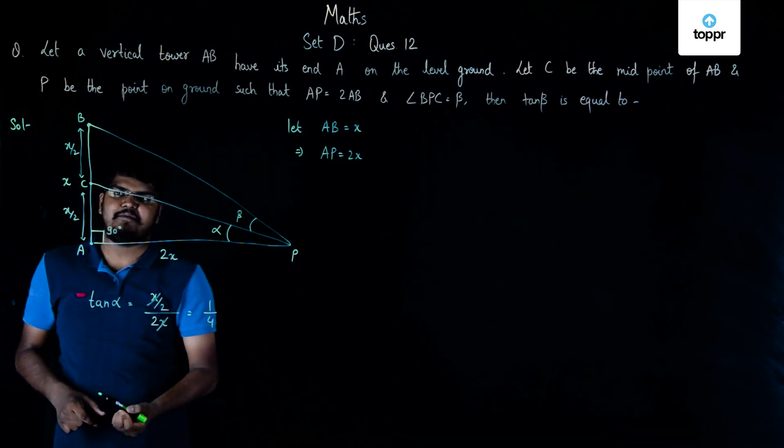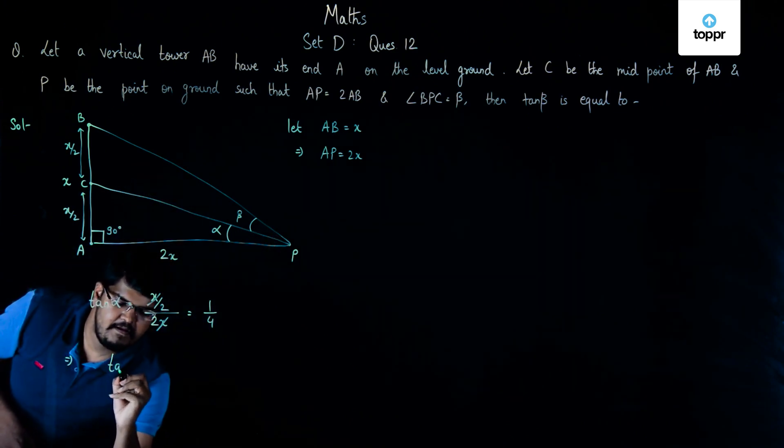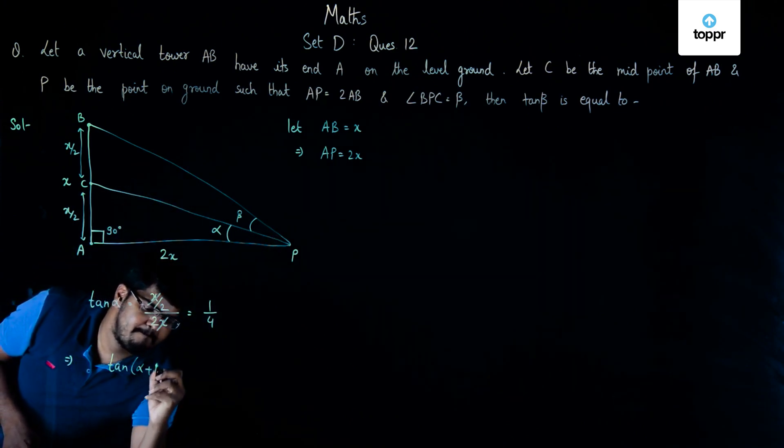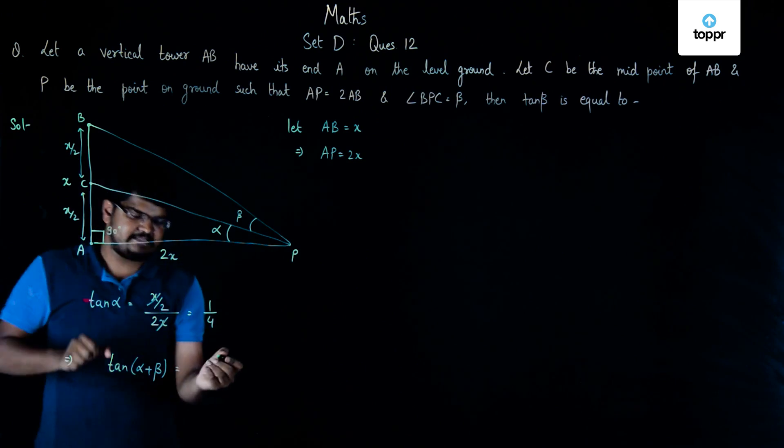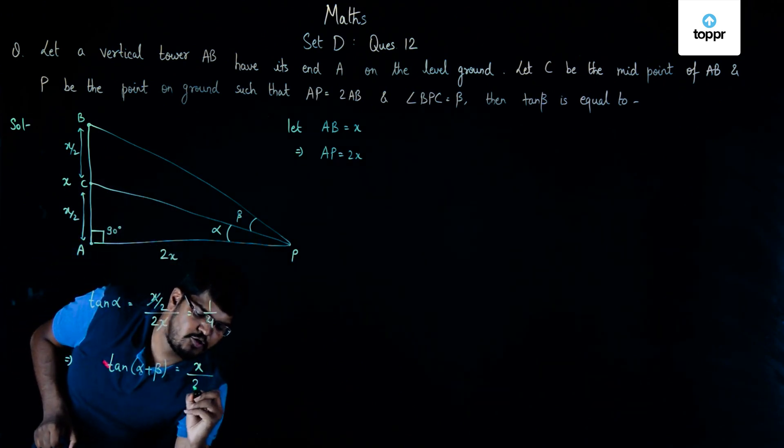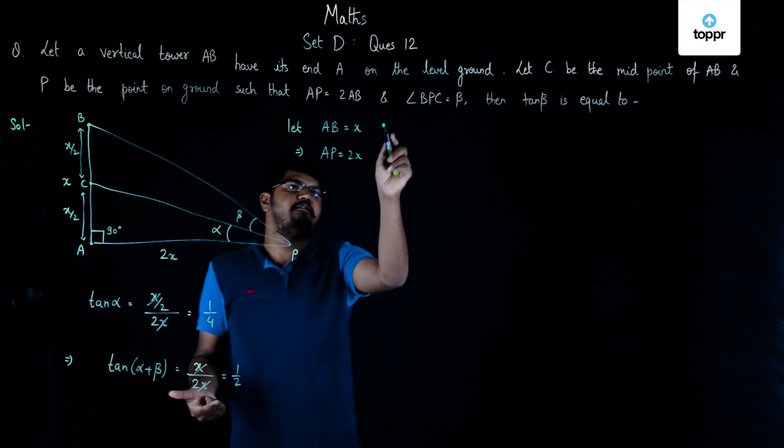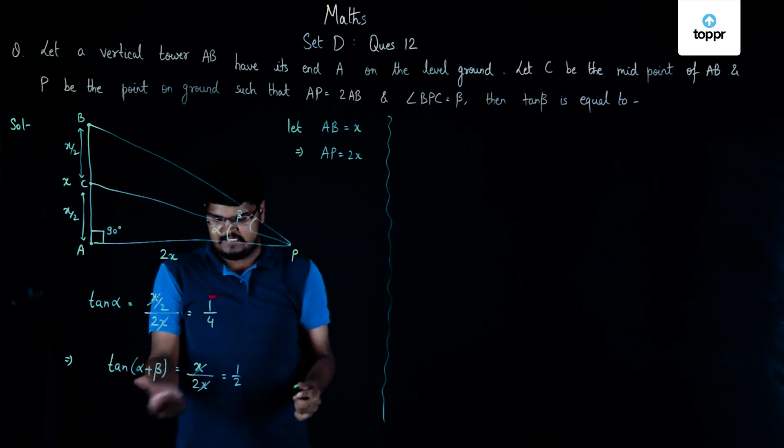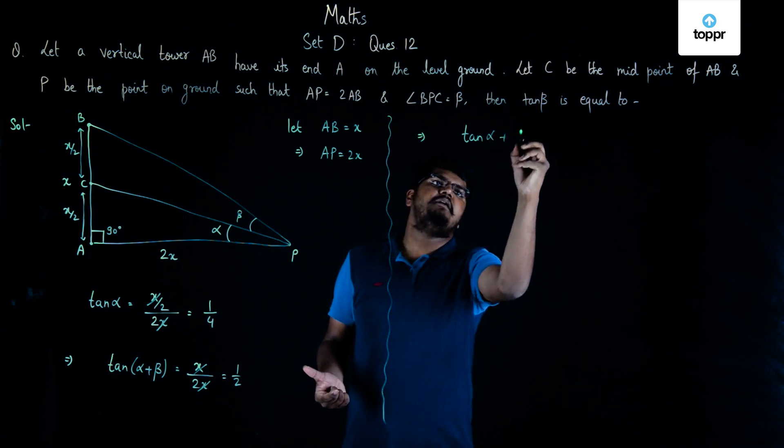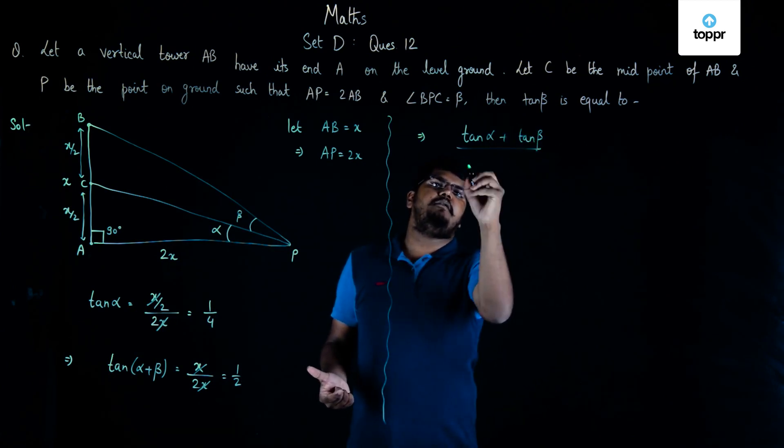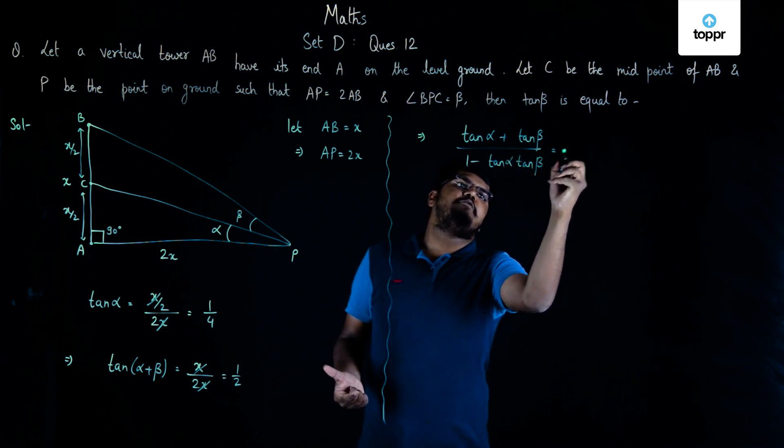So, we have tan alpha is equal to 1 by 4 and at the same time, we can say that we have tan of alpha plus beta is equal to this whole perpendicular length which is X upon 2X which gives us 1 by 2. Now, if we continue solving this particular equation which is tan alpha plus beta is equal to 1 by 2, then we can say tan alpha plus beta is tan alpha plus tan beta upon 1 minus tan alpha tan beta is equal to 1 by 2.